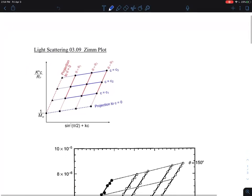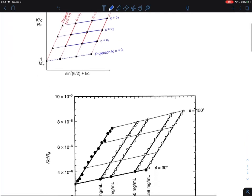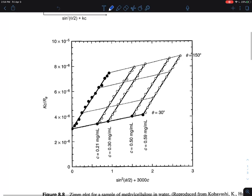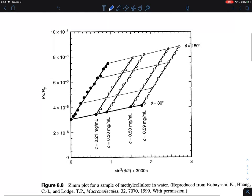The following portion, I will call it 0.309, which is called the Zimm plot. So Zimm plot is really the apex of light scattering. This is an example of actual experimental data.